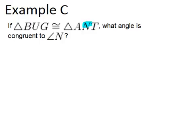So notice that angle N is the second letter in ANT, so it has to match the second letter in BUG. So that means angle N has to be congruent to angle U. So the answer would be angle U.